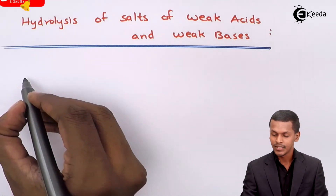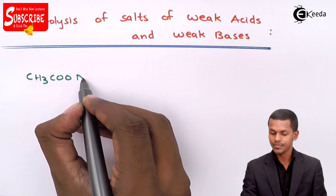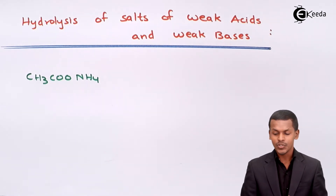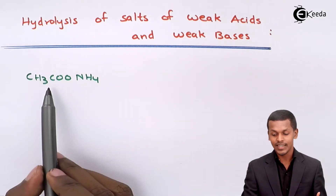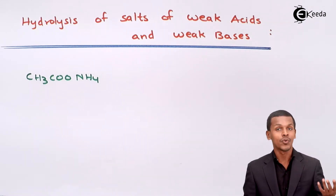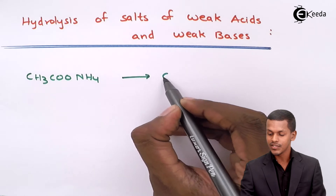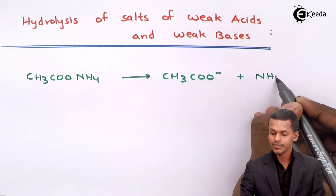In that case, the example I would name is CH₃COONH₄. This is a salt, so it will dissociate completely. It is made up of a weak acid CH₃COOH and a weak base NH₄OH. That is the reason this salt dissociates into CH₃COO⁻ along with NH₄⁺.